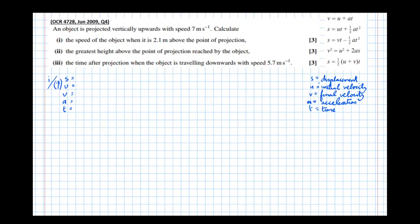You could easily decide that down is, and as long as you're consistent, you'll end up with the same answer. So an object is projected vertically upwards with speed 7 meters per second. Let's do a diagram as well. So there's the object projected vertically upwards, then back down again.